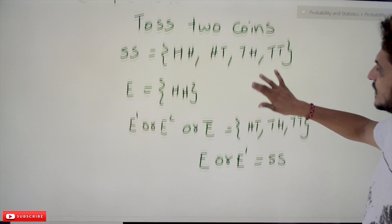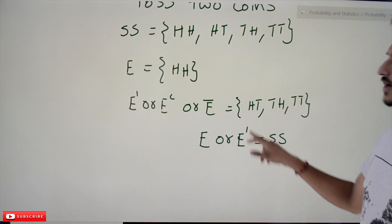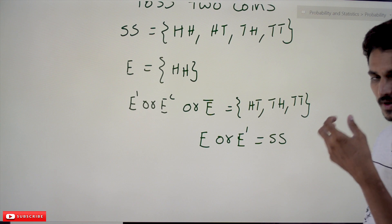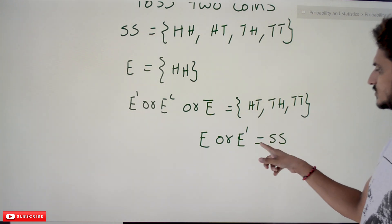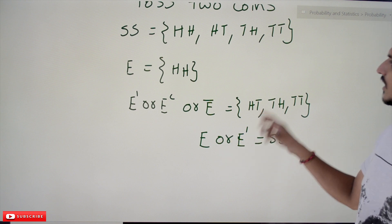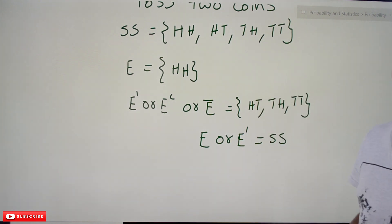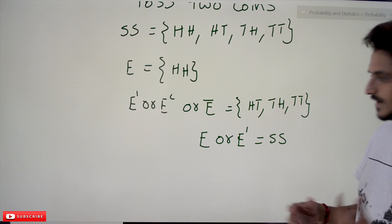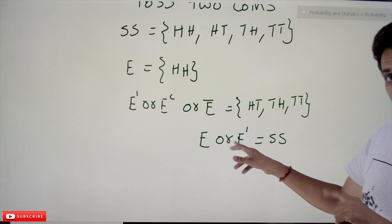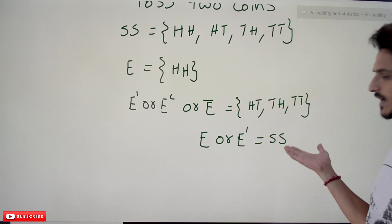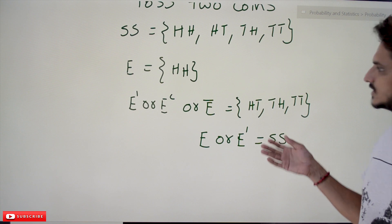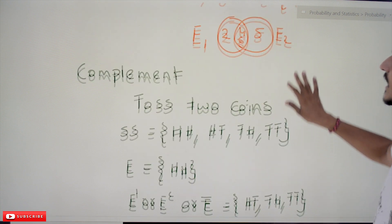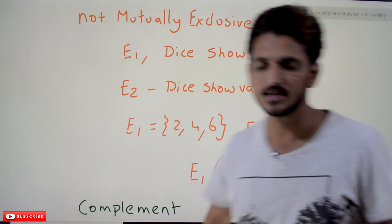One more important point to remember: E union E-complement equals the sample space. Either an element belongs to E or it belongs to E-complement — together they cover the entire sample space. This is the key property of complement events.